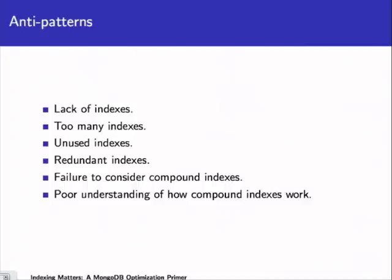Let's look at some anti-patterns when it comes to indexing. When people say their Mongo application isn't performing well, we ask about their indexes. Sometimes they say they don't have any indexes — obviously a problem. But we also get the opposite where somebody says they've indexed everything, which can also be a problem. We also see unused indexes, redundant indexes, failure to consider compound indexes, and a poor understanding of how compound indexes actually work.